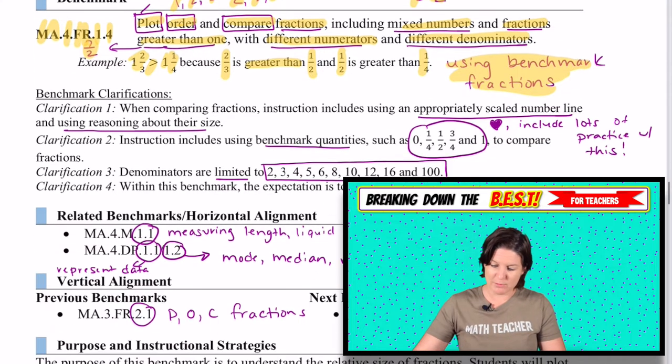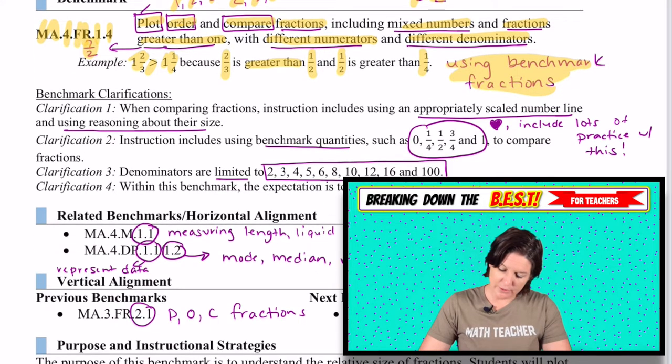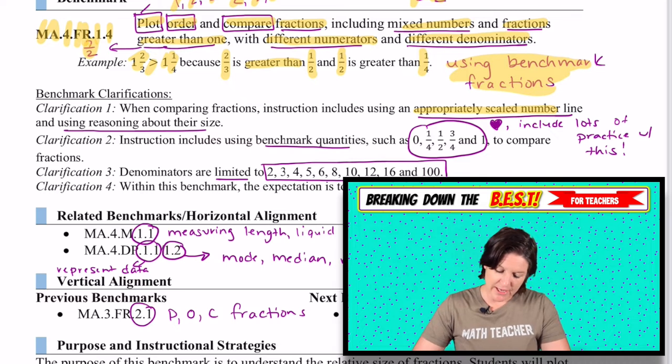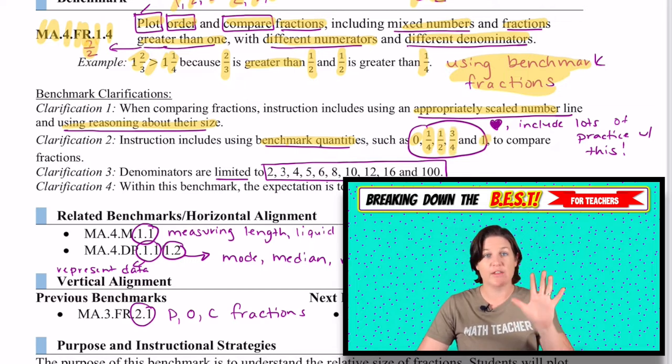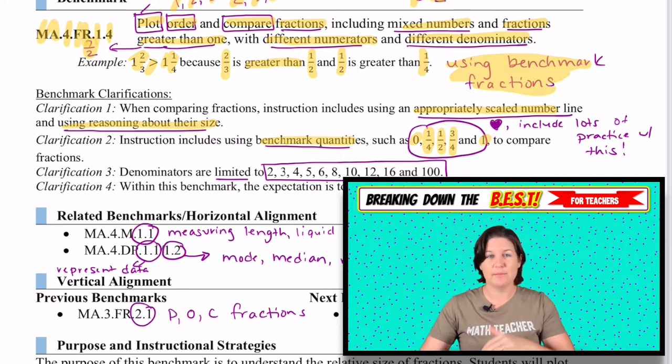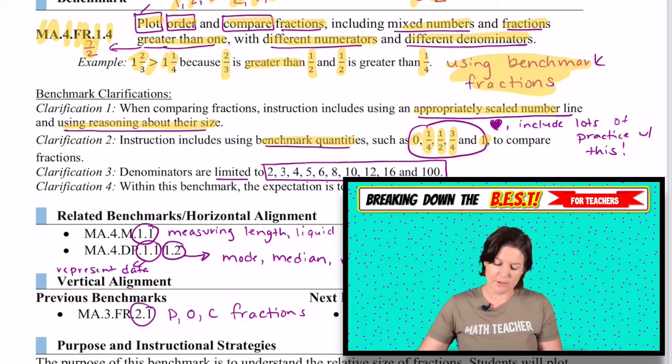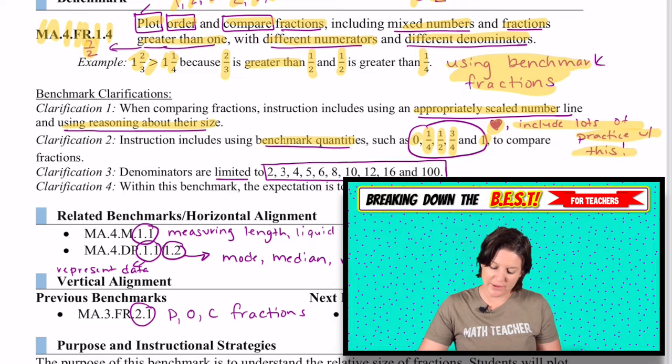All right, let's get back to the benchmark clarifications. It says that we will be using appropriately scaled number lines and using reasoning about their size. One thing that I love is that we're including the use of benchmark quantities, like I just mentioned previously, such as zero, one-fourth, one-half, three-fourths, and one, really focusing on the one-fourth, one-half, and three-fourths in between those two whole numbers. When students understand those benchmark fractions, they can begin to think about the other fractions and how they're related to those benchmark fractions. And I put that I love this because we include a lot of practice of this.